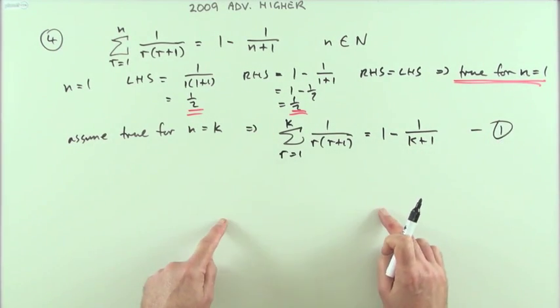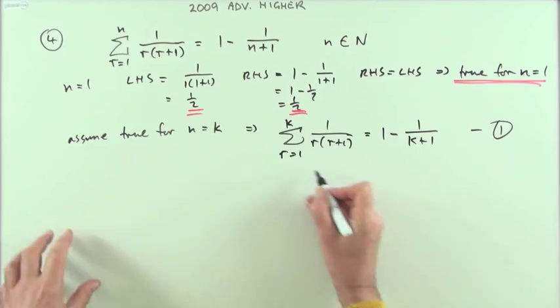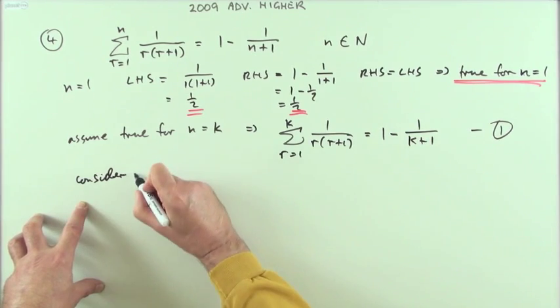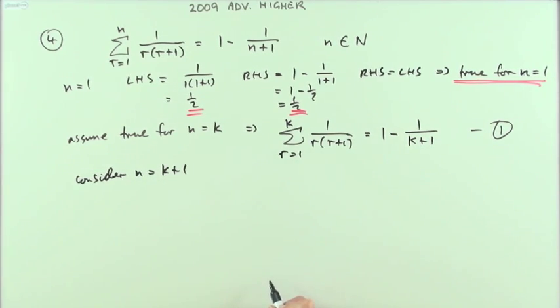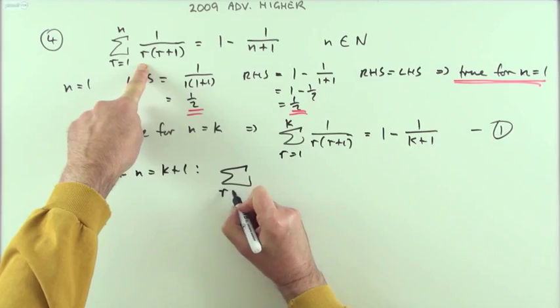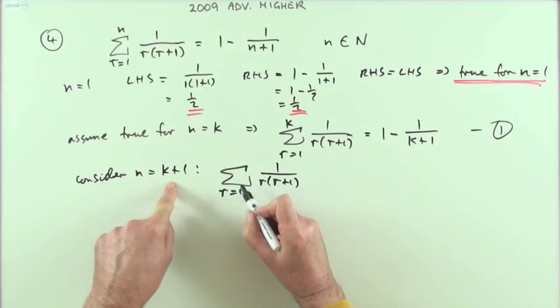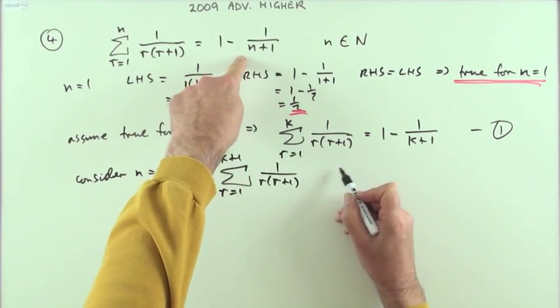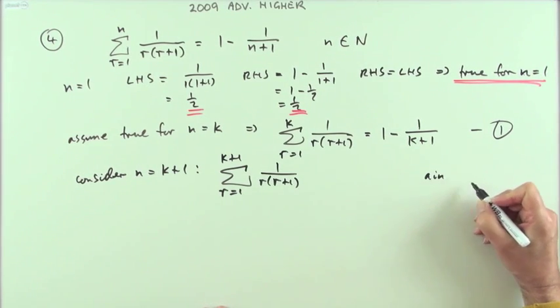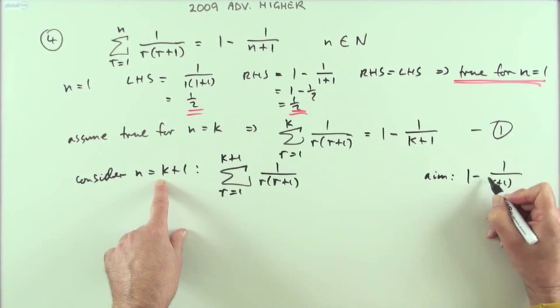I'll call that statement one. This is the inductive hypothesis. I'm going to use this in the next part to see if I can end up with a true statement that will result in the original form. What I'm going to do next is consider n equals k plus one. What would that look like? Well, if n is k plus one, I'm going to have the sum of this expression r(r+1) going from r is one to k plus one, but I'm not going to say it's equal to one minus one over, because that's just begging the question.